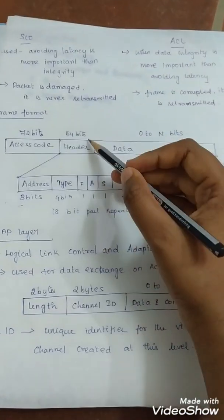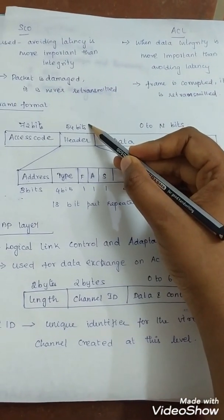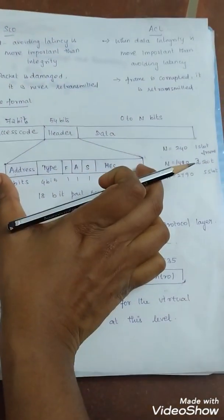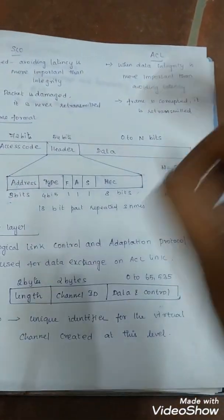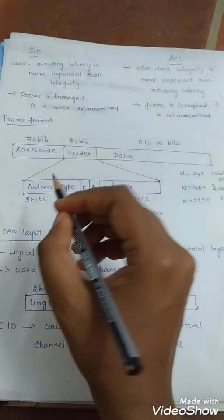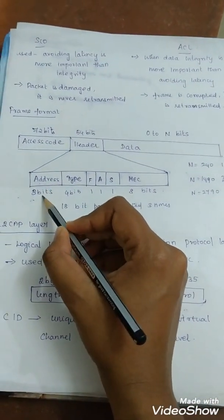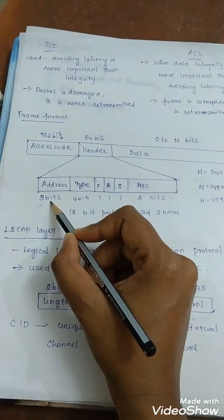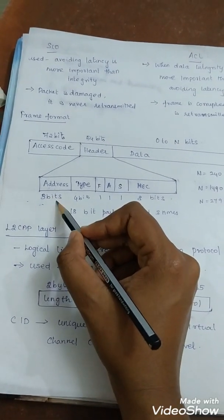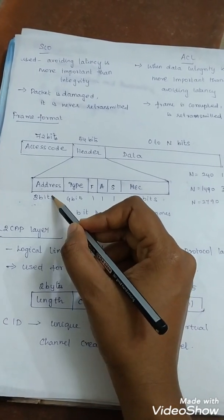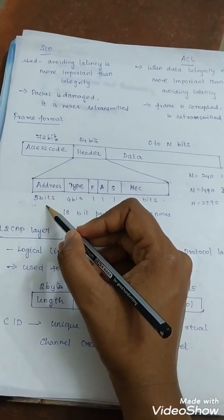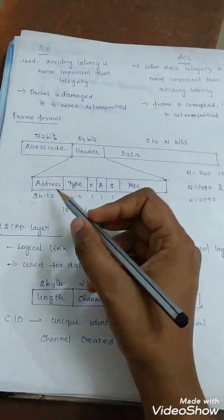Next one: header. Header is a 54-bit field, a repeated pattern of 18 bits three times. First one, address: a three-bit subfield defining up to seven secondaries. If address is zero, it is used for broadcast communication from the primary to all the secondaries.